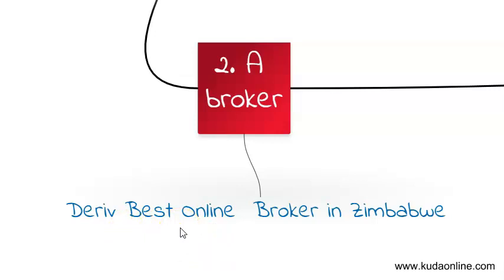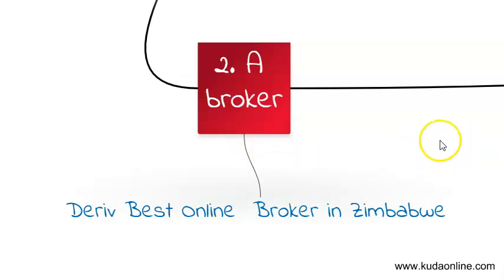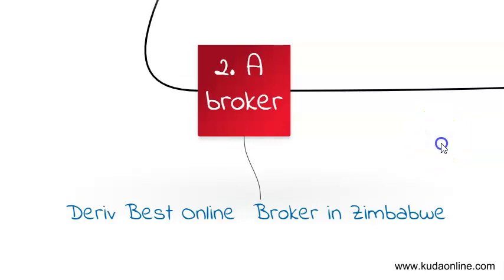The reason why Deriv is one of the recommended online forex brokers is because you can withdraw and deposit your money with EcoCash, ZipIt, or any other easy methods. I'm going to add a link below this video that will take you to the Deriv website, and also a video explaining the different deposit methods you can use on Deriv.